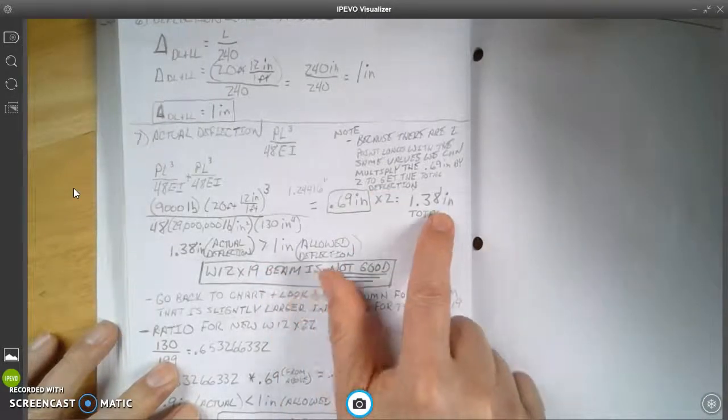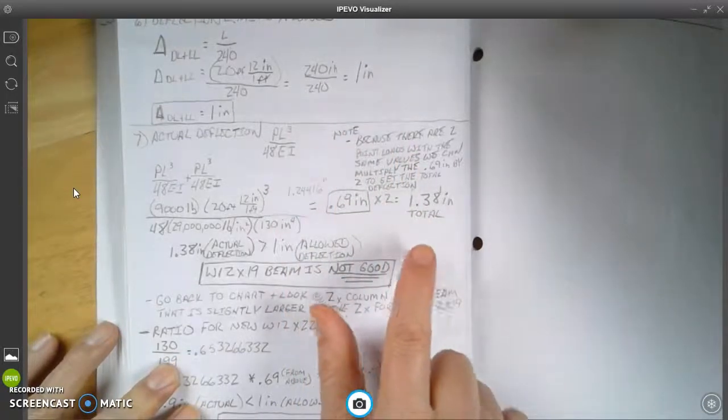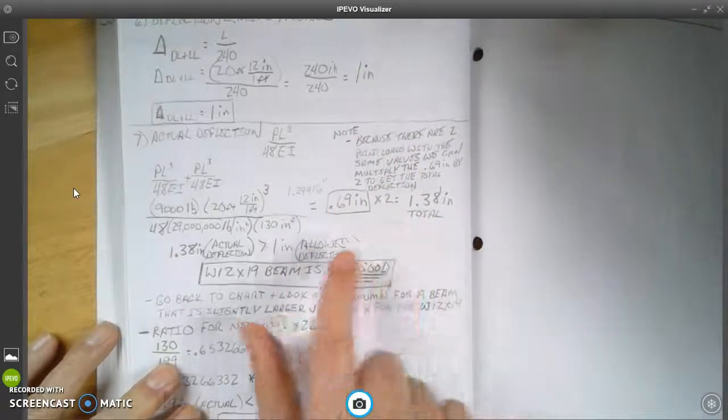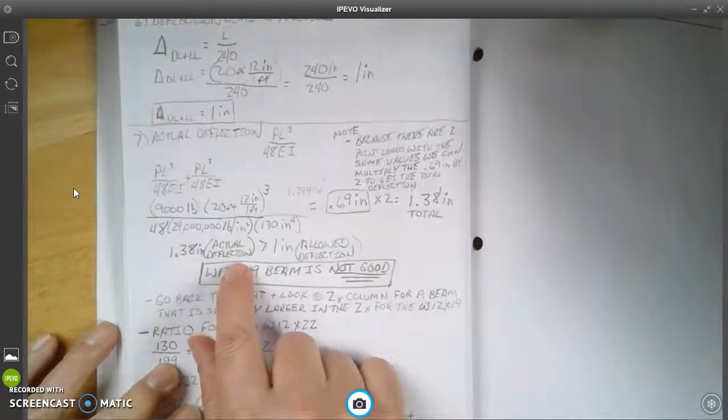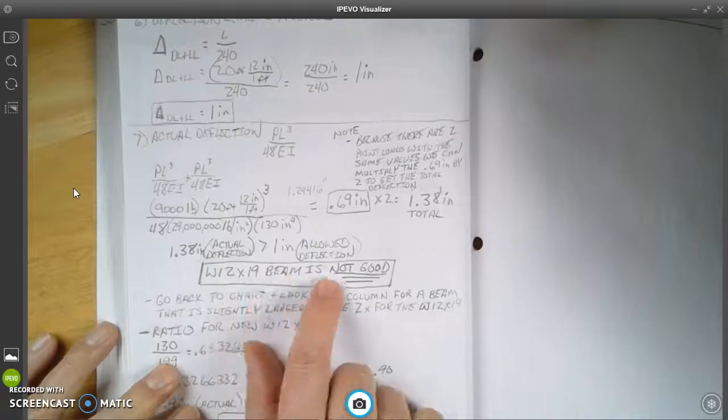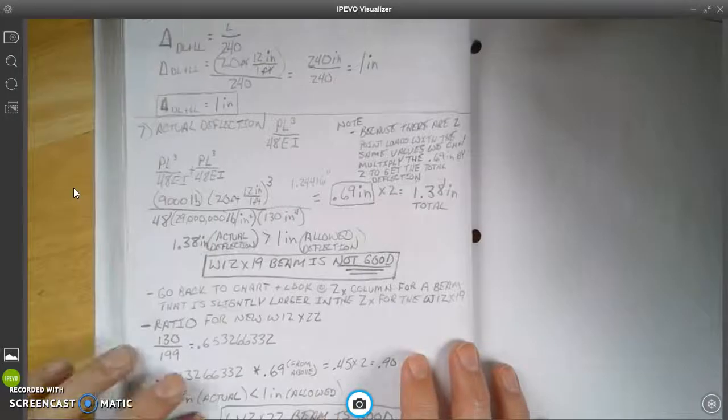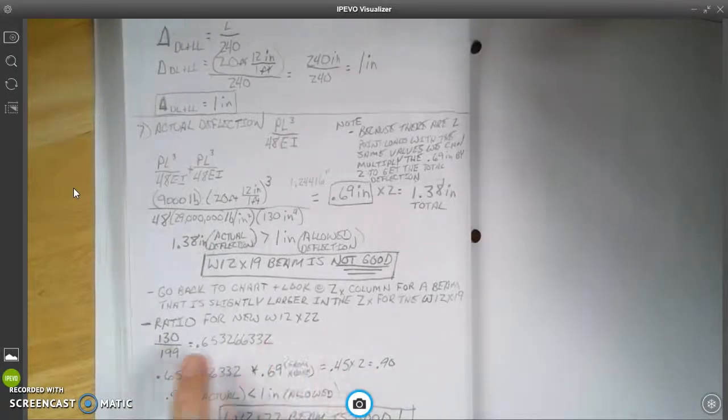You'll see that the total deflection here is 1.38, which is greater than this up here, which is 1. So that beam that we have chosen in this instance is not going to work. This W12 by 19, so it's no good.